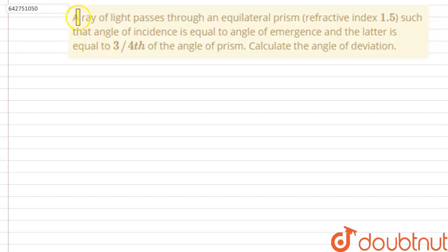Hello everyone. A ray of light passes through an equilateral prism of refractive index 1.5 such that the angle of incidence is equal to the angle of emergence and the latter is equal to 3/4th of the angle of prism. Calculate the angle of deviation.